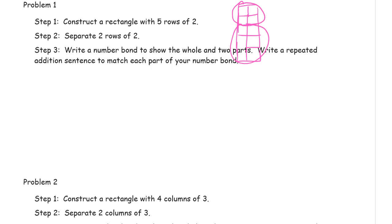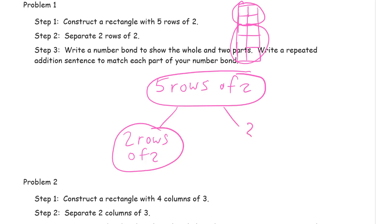So this is what the number bond should look like. It should look like this. The whole thing is, the whole array is 5 rows of 2. So this is your whole, for the number bond, is 5 rows of 2. There's your whole. And your parts are 2 rows of 2.